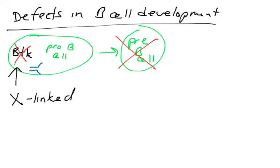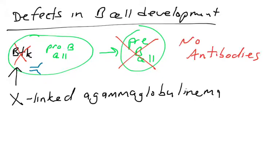BTK is found in the X chromosome, so it is an X-linked genetic disorder. So it's more likely to occur in males than females. So this disorder is referred to as X-linked agammaglobulinemia. That means they do not make antibodies on their own.